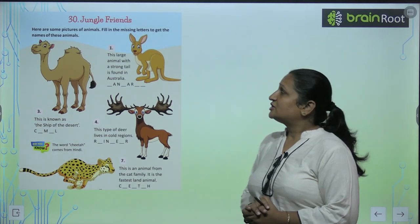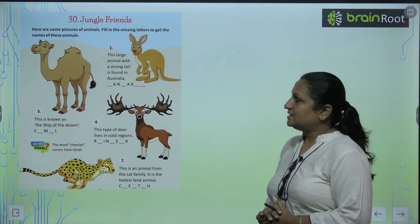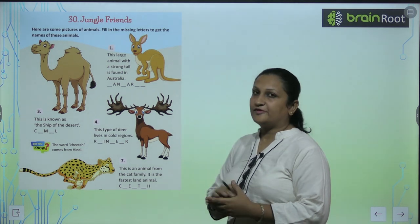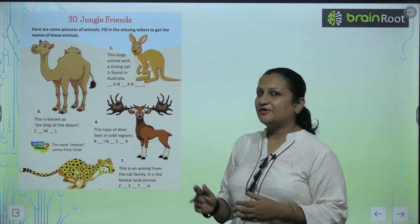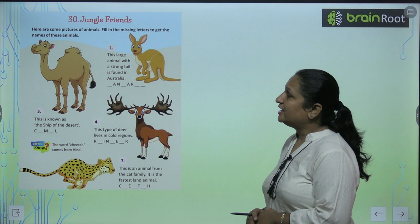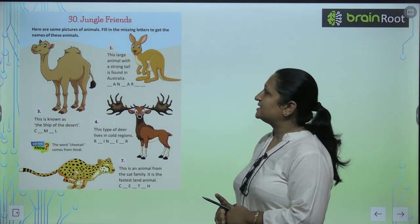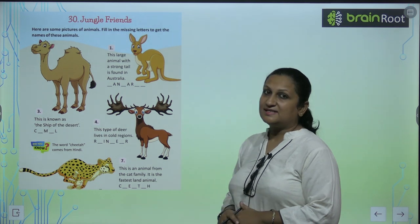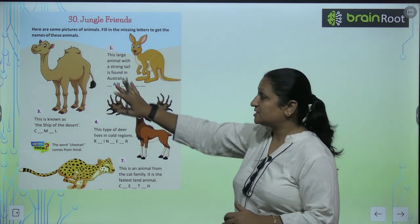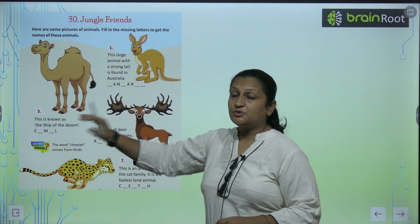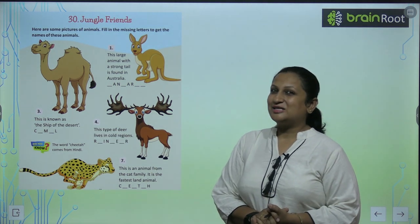See chapter number 30 children, it's Jungle Friends. Here we have pictures of animals and we have to complete them. Fill in the missing letters to get the names of these animals. We have pictures here, descriptions here, and we have to complete the spellings.